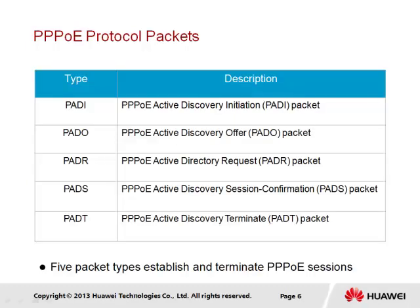The PPPoE process is based on two stages: the discovery stage and the PPP session stage. The discovery stage uses four packet types: the PPPoE Active Discovery Initiation, or PADi; the Discovery Offer via the PADO packet; the Discovery Request via the PADR packet; and the Discovery Session Confirmation, or PADS packet. The remaining packet type is the PADT, or PPPoE Active Discovery Terminate packet, which manages termination of an established PPPoE session.